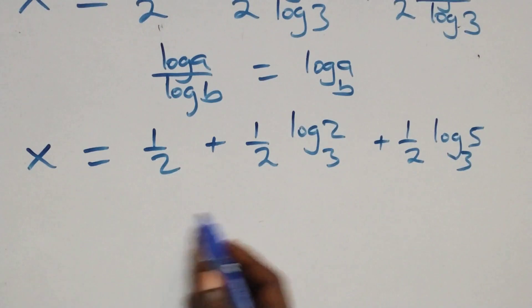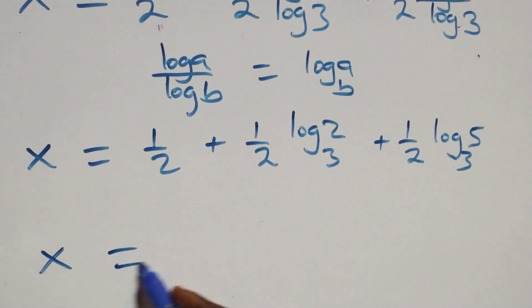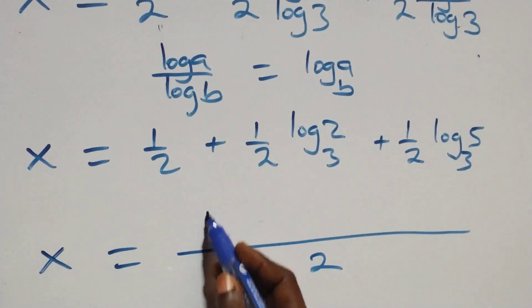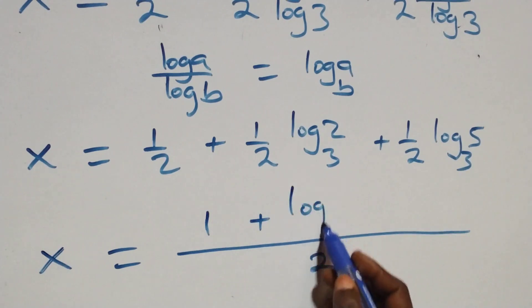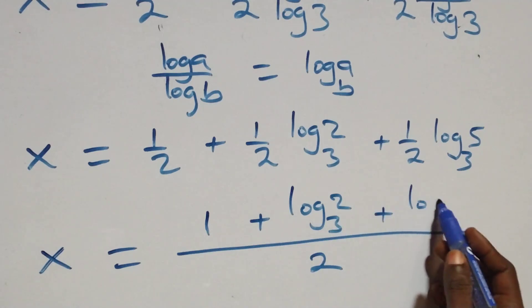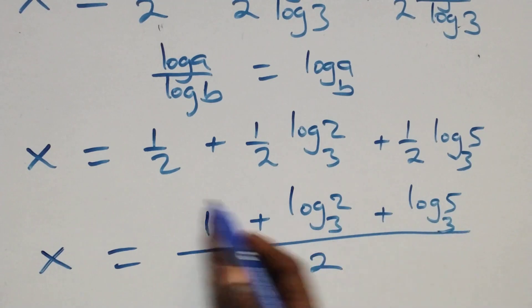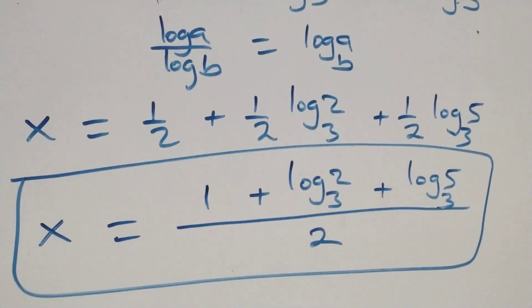Now, bringing this together as a fraction, we have x equals to 1 plus log 2 base 3 plus log 5 base 3, all over 2. That is the value of x.